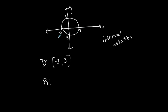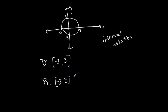Now for the range, the smallest value of y is negative 3. Am I including negative 3? Yes, because there's a point on the graph at y-coordinate negative 3, so I use a bracket. Everything is included up until positive 3, which is also included with a bracket. So the range is [-3, 3] as well. This is my domain and range for this example in interval notation.